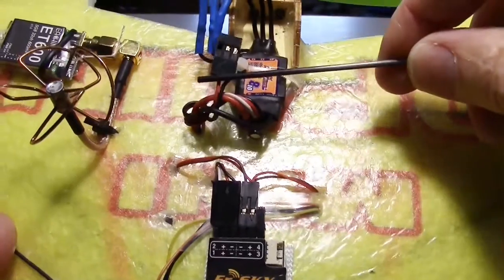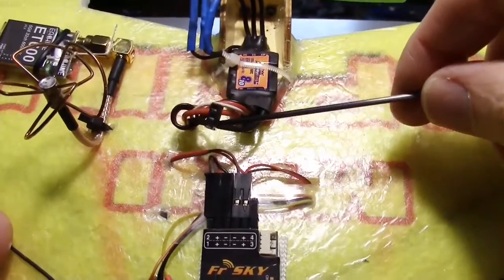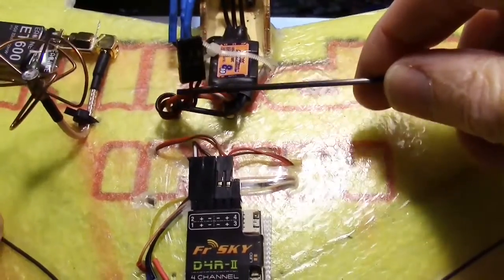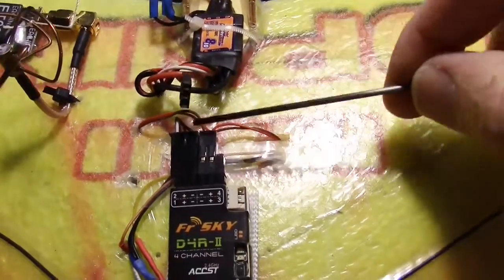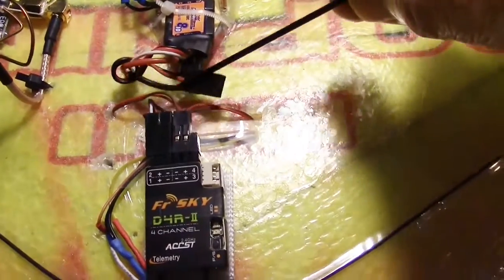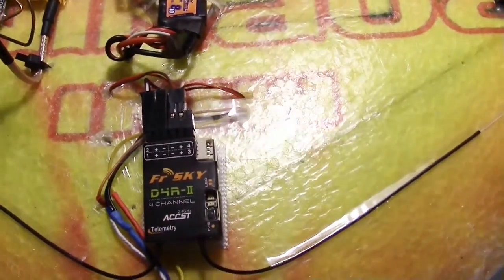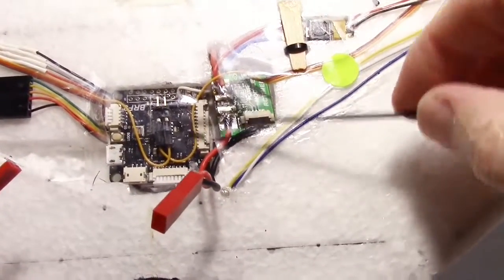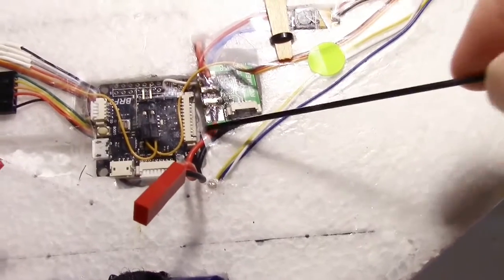This connector right here that comes from the ESC is not used. And it has the power and ground that comes from the ESC. I did not use that because it's noisy and I didn't want to incorporate any noise into the system. Instead, like I said, I'm using the power module here on the back to power the B rotor board and also provide the current and voltage sense.